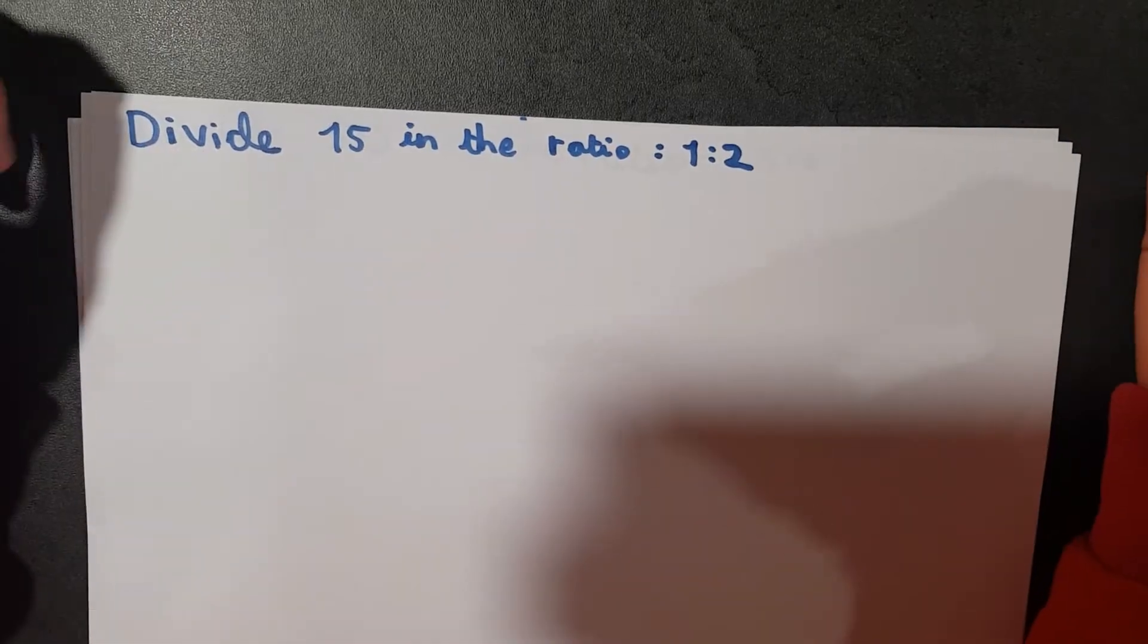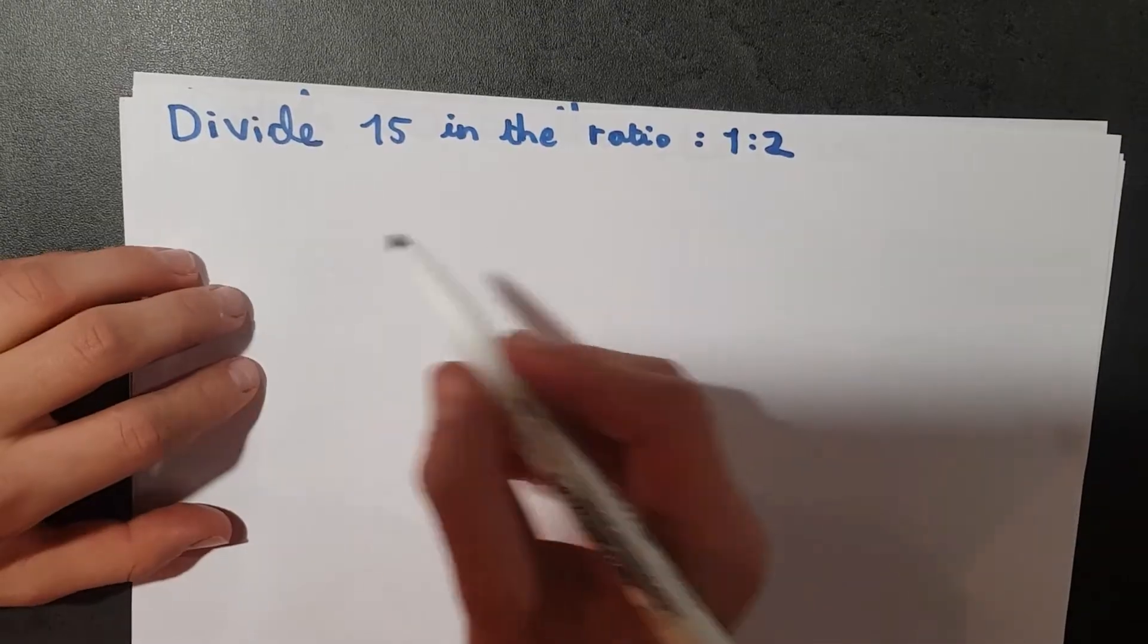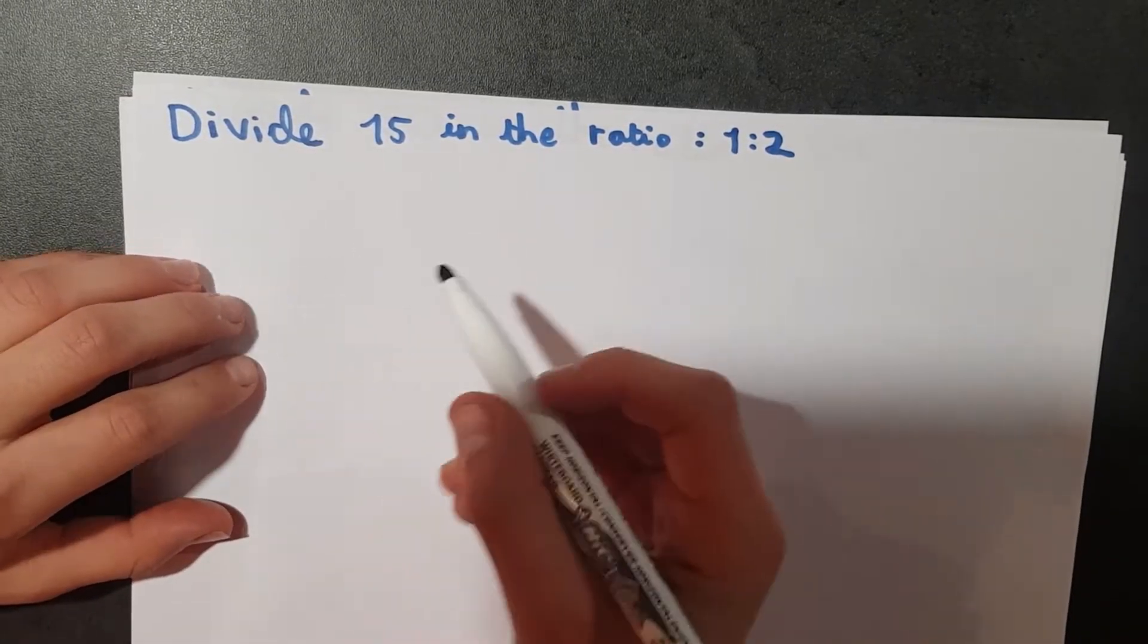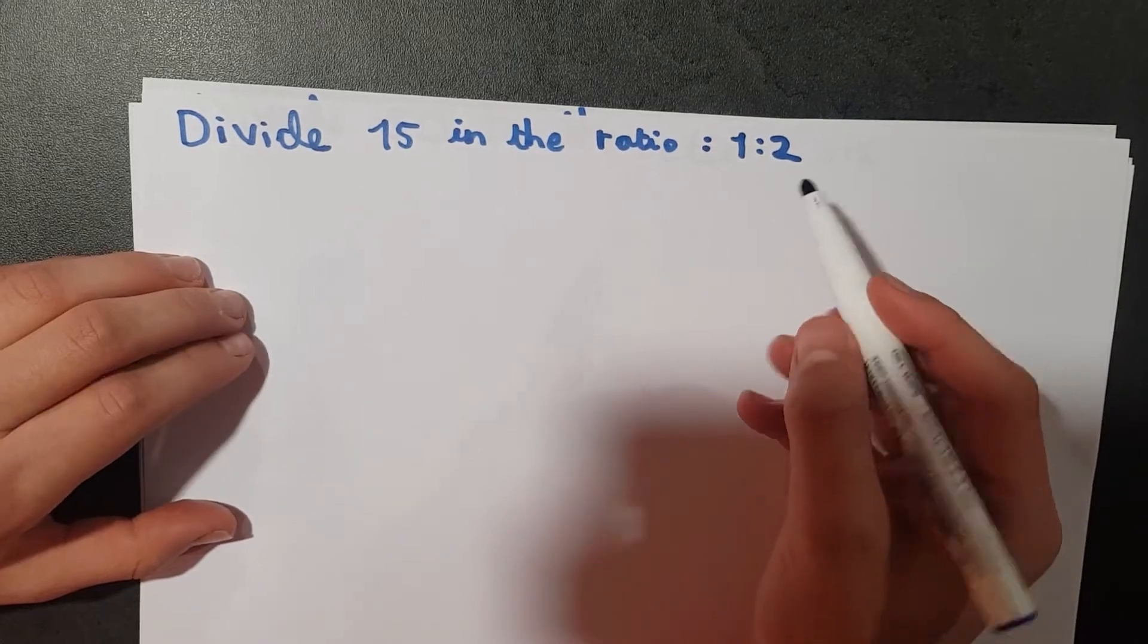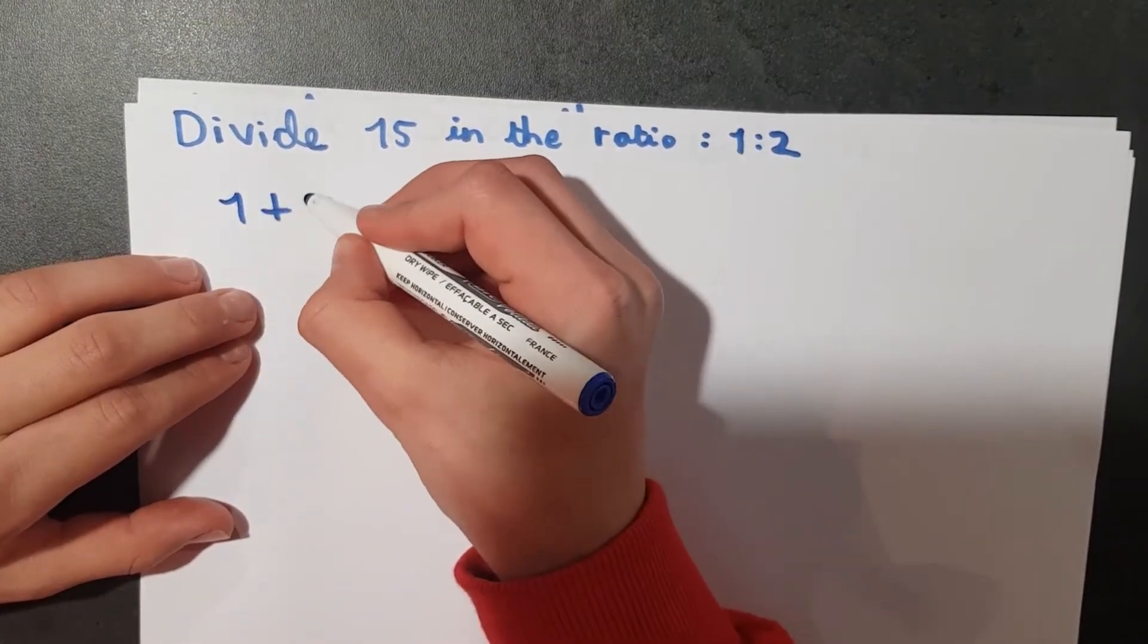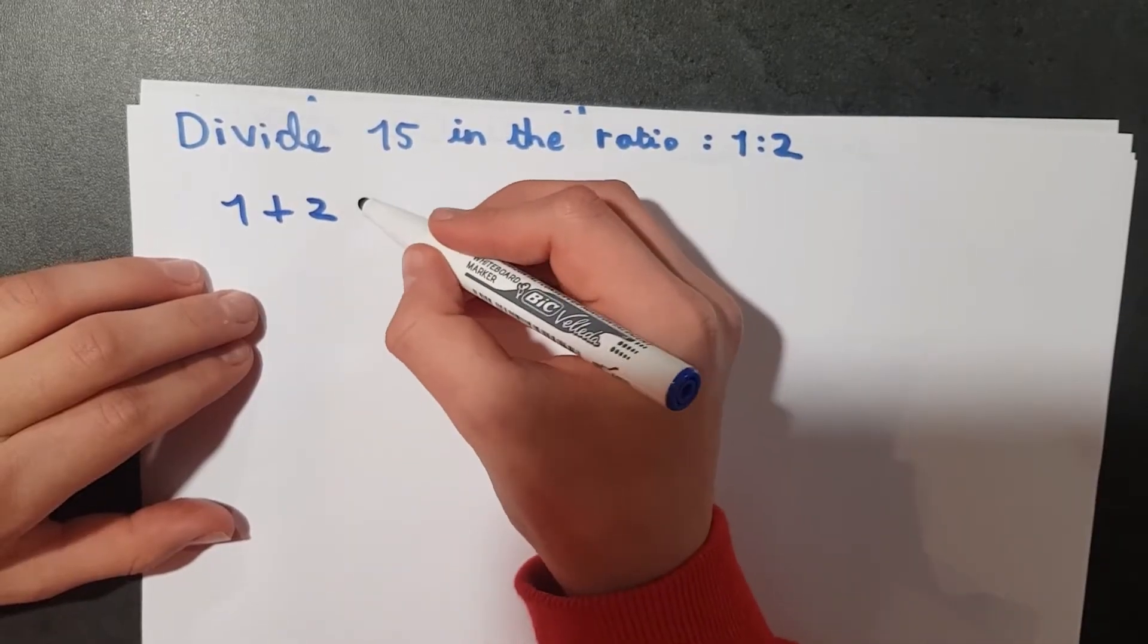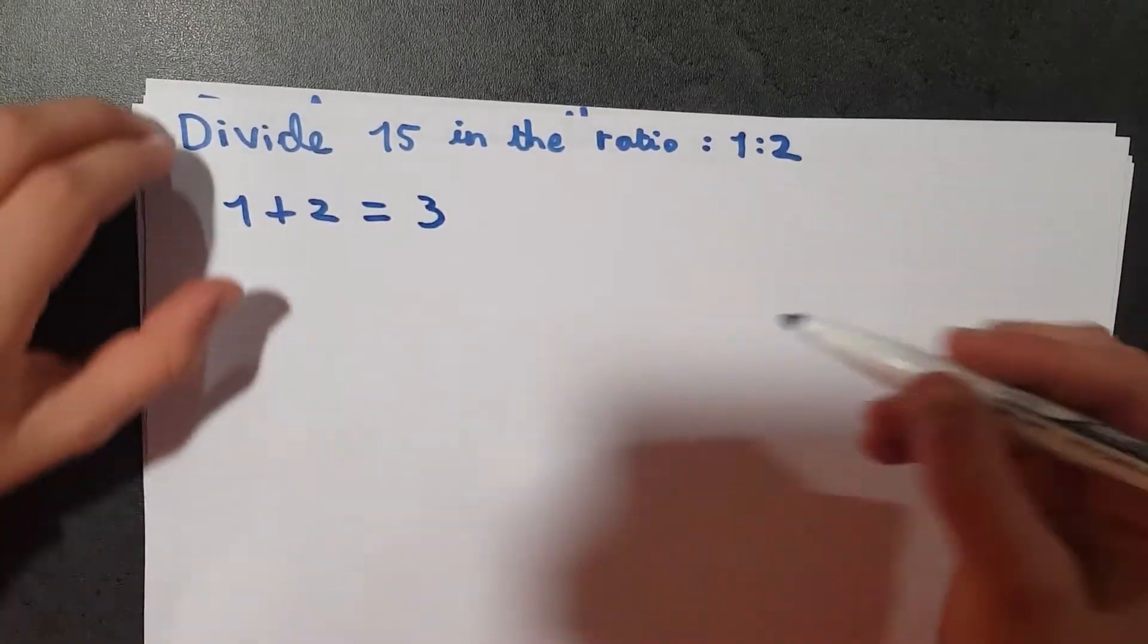calculate ratios. Now when we divide a number into a particular ratio, all we have to do is look at the ratio first. So here we have 1 to 2, so what we do is 1 plus 2. Now that is 3. Now basically what we want to look